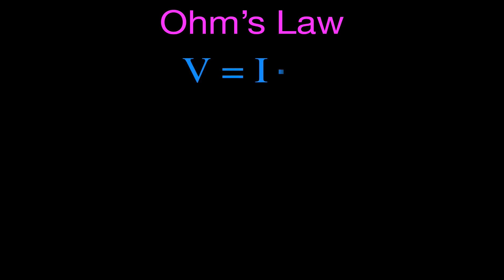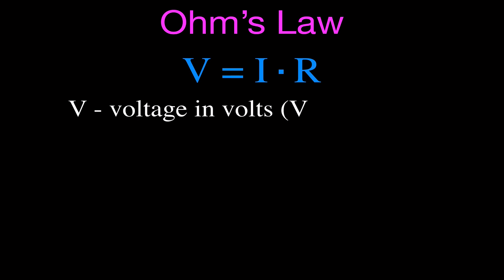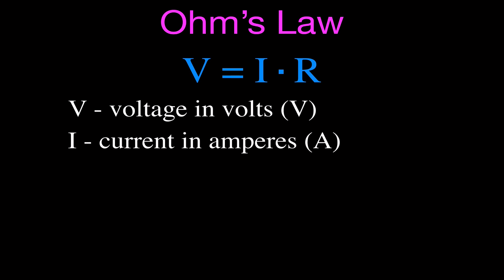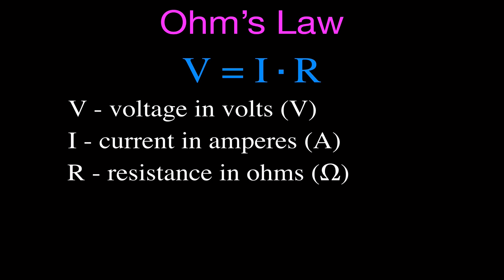Ohm's Law simply says that V equals I times R. It says that the voltage, which is measured in volts, is equal to the current, which is measured in amperes, times the resistance, which is measured in ohms. Ohms is abbreviated with this symbol, which is the Greek letter omega.